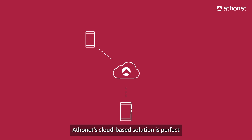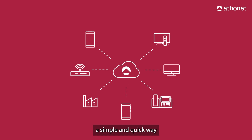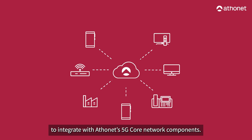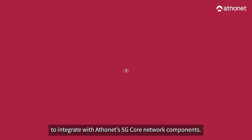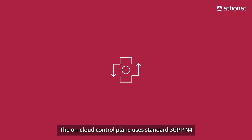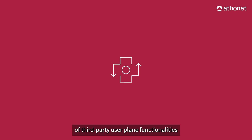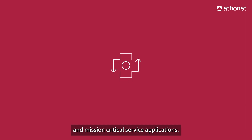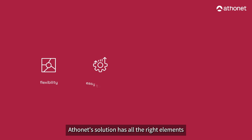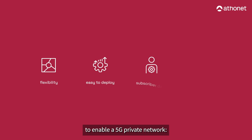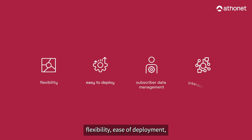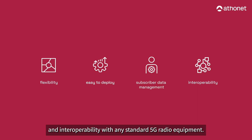Athanet's cloud-based solution is perfect for technology partners requesting a simple and quick way to integrate with Athanet's 5G core network components. The on-cloud control plane uses standard 3GPP N4 and N5 interfaces for the integration of third-party user plane functionalities and mission-critical service applications. Athanet's solution has all the right elements to enable a 5G private network: flexibility, ease of deployment, simple subscriber data management, and interoperability with any standard 5G radio equipment.